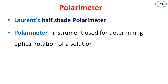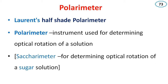Optical rotation we have already discussed. The polarimeter is a measuring instrument used for solutions — that may be a sugar solution, that may be a salt solution, etc. When used specifically for sugar solutions, the instrument is called a saccharimeter. A saccharimeter is used for determining optical rotation of a sugar solution.